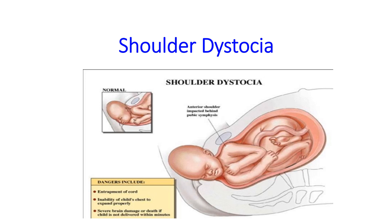In this video we are discussing another obstetrical emergency: shoulder dystocia. The head has delivered but the shoulder is still inside the maternal pelvis. The head comes out but the shoulder gets caught inside the pelvis — that is known as shoulder dystocia.